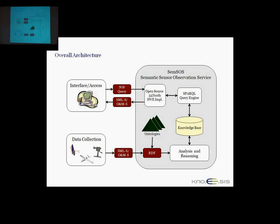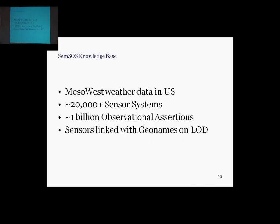Our knowledge base started with MESA West weather data in the U.S. MESA West aggregates data from some 20,000 sensor systems all in the North America region. It's a research center at the University of Utah, Department of Meteorology. We're working on generating a billion observational assertions. We looked at famous storms — a storm in Nevada, Hurricane Katrina, Hurricane Bill, Hurricane Ike — and we generated a billion observational assertions.